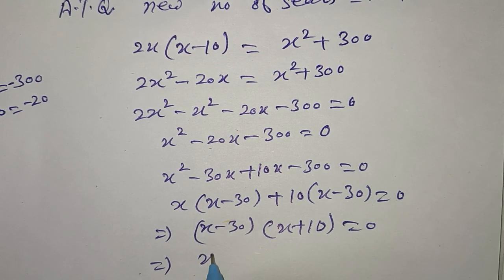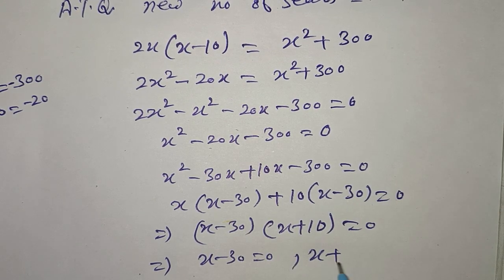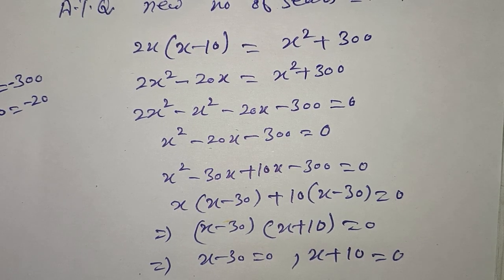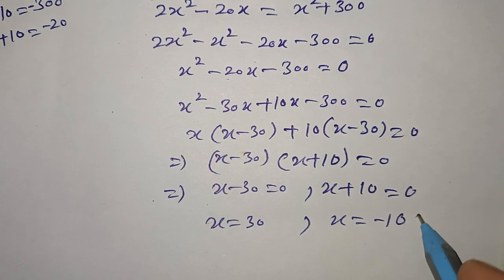This implies x minus 30 = 0, x plus 10 = 0. x = 30, x = minus 10 rejected.